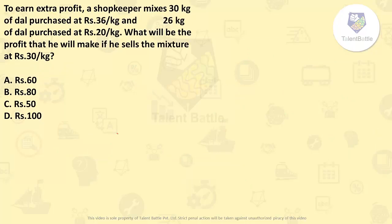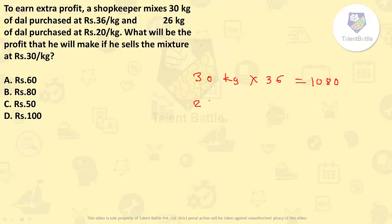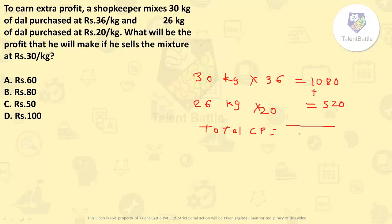Now let's check this question: To earn extra profit, a shopkeeper mixes 30 kg of dal purchased at rupees 36 per kg and 26 kg of dal purchased at 20 rupees per kg. What will be the profit if he sells the mixture at 30 rupees per kg? Cost price of first type: 30 × 36 = 1080 rupees. Cost price of second type: 26 × 20 = 520 rupees. Total cost price = 1600 rupees.